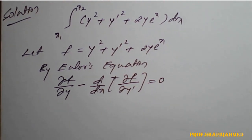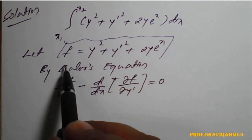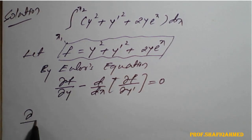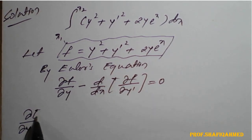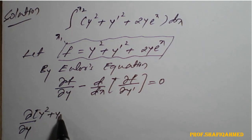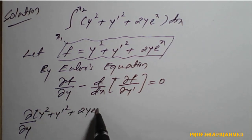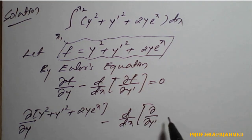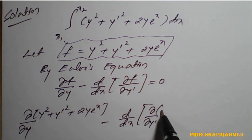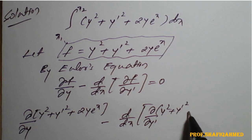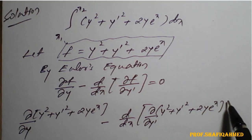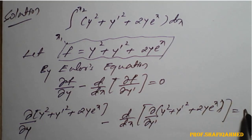We will apply the value of f into Euler's equation. So it becomes: ∂/∂y of (y squared plus y-dash squared plus 2y·eˣ) minus d/dx of ∂/∂y-dash of (y squared plus y-dash squared plus 2y·eˣ) equals 0.